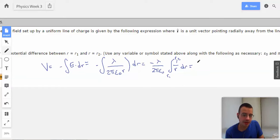Which we know from math is going to be negative lambda over 2 pi epsilon dot natural log of R2 minus natural log of R1.